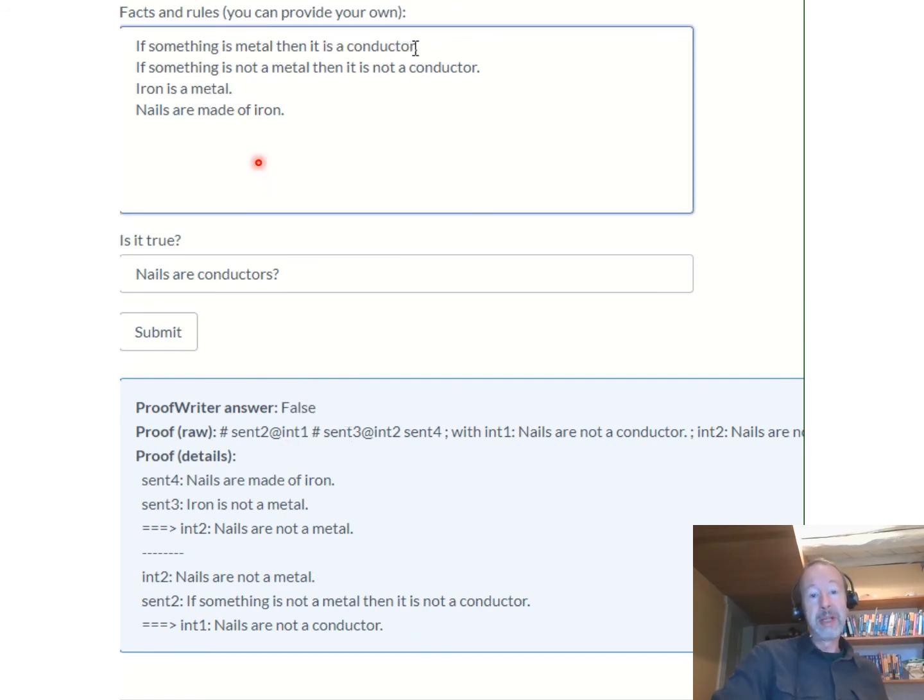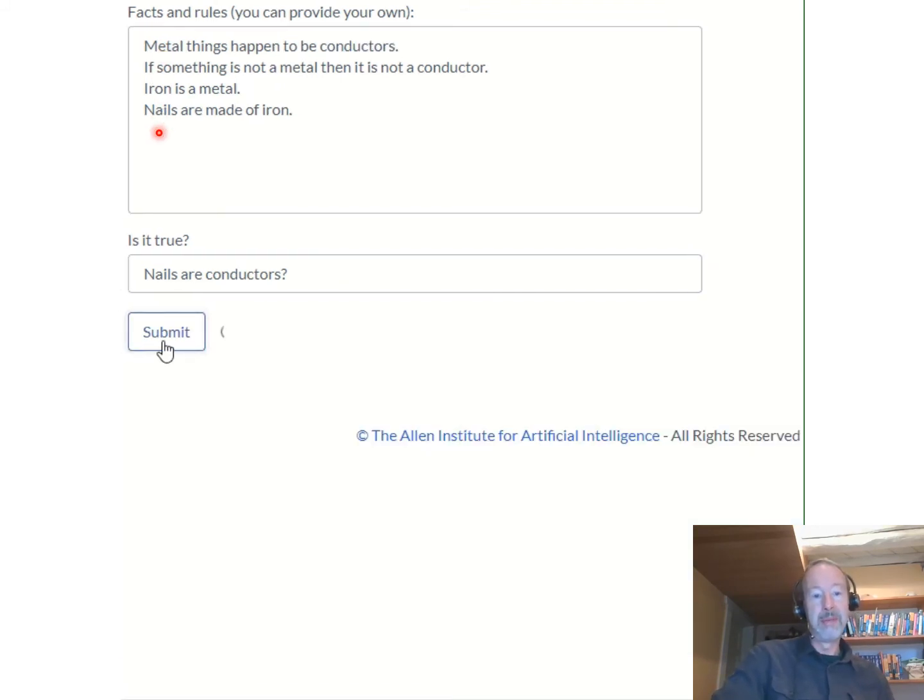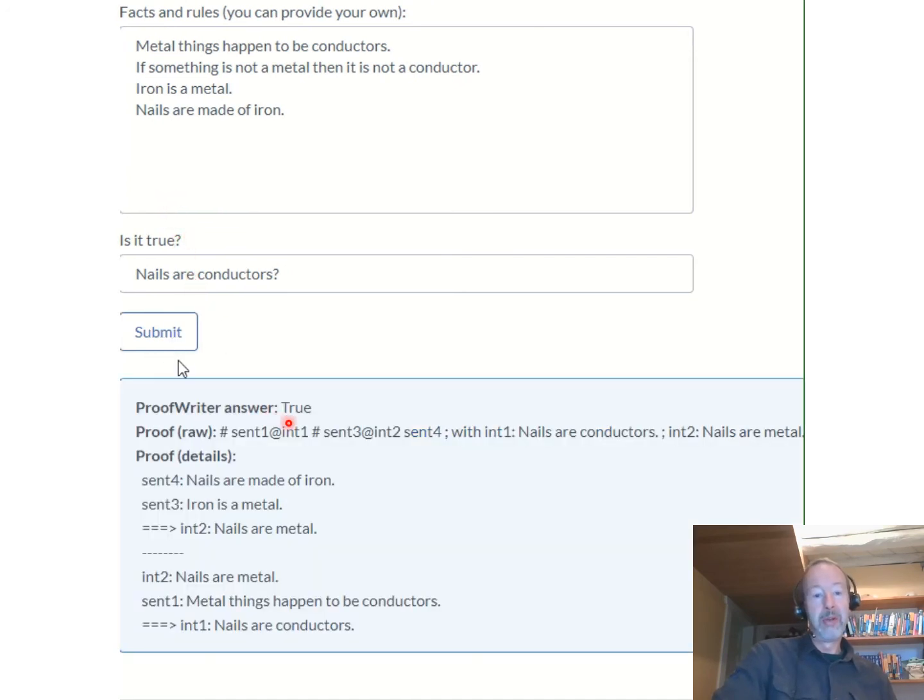The system is also robust to variations in language. So I can rephrase this first rule, for instance, metal things happen to be conductors, and then repose the query to see if it is able to reason with this. And again, the system is able to derive the right conclusion, here the answer true, demonstrating robustness to the language that's being used.